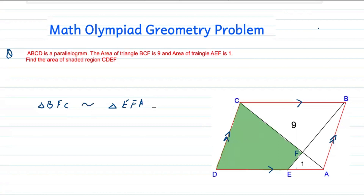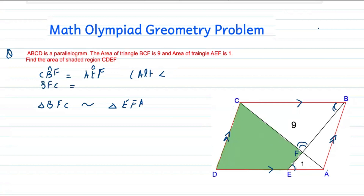How are these two triangles similar? You see here angle CBF is equal to angle AEF. The reason is that these are alternate angles — CBF and AEF are alternate angles of parallel lines. Next, angle BFC is equal to angle EFA because these are vertically opposite angles. Therefore these two triangles are similar.